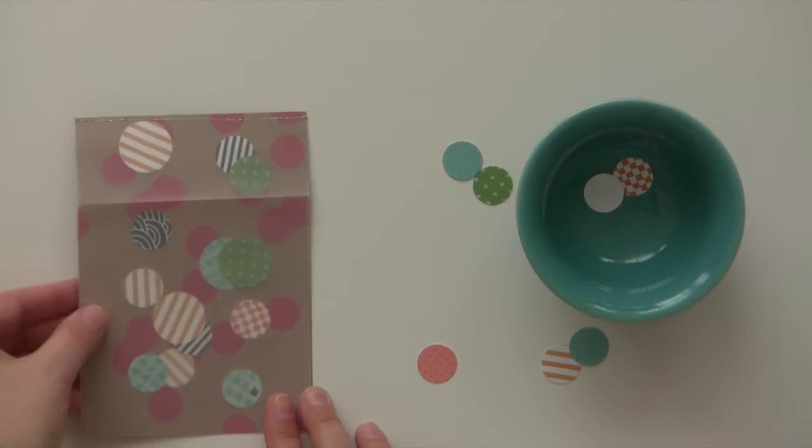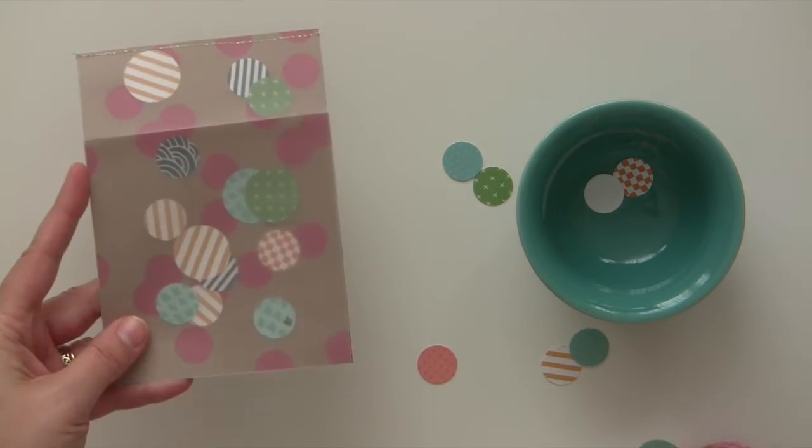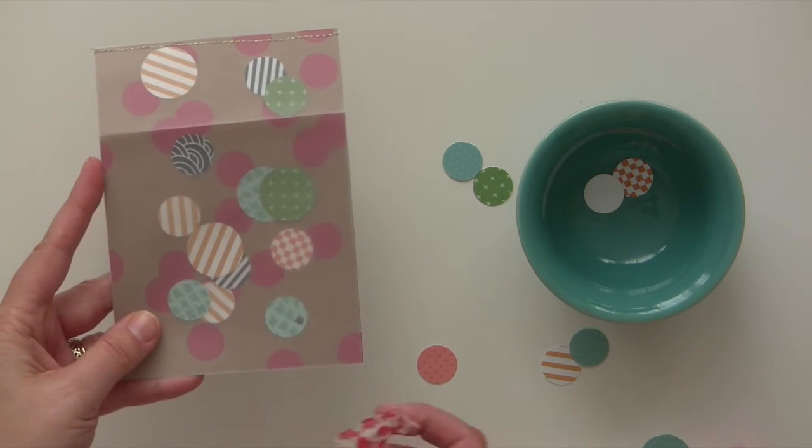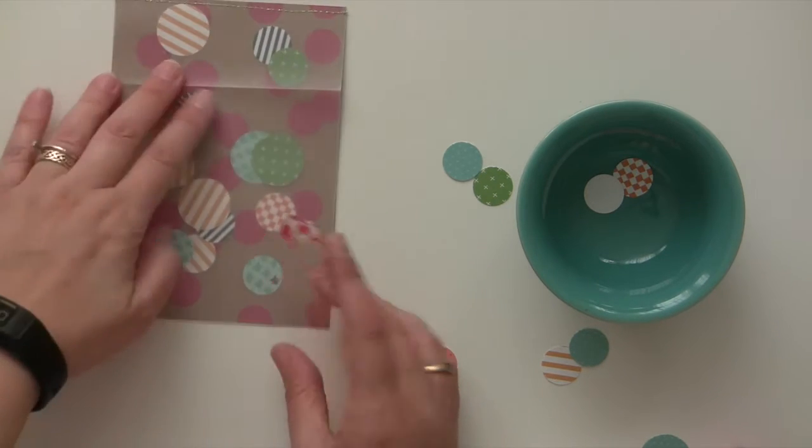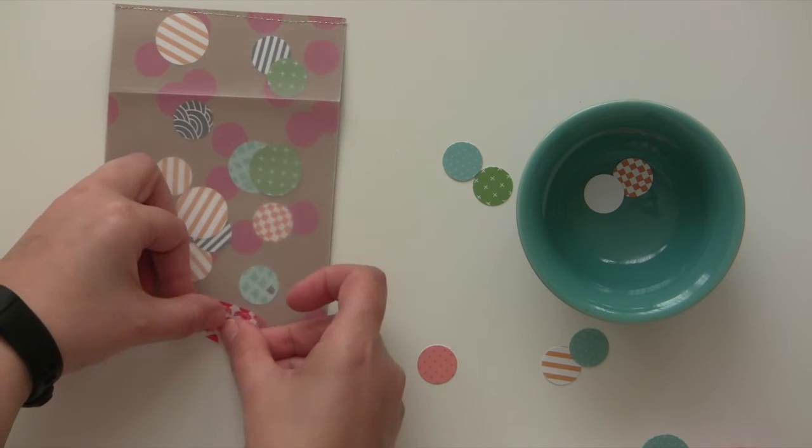I put the vellum back down and then I got some washi tape and just tacked it on there just until I could take it over to the sewing machine so they wouldn't all fall out onto the floor.